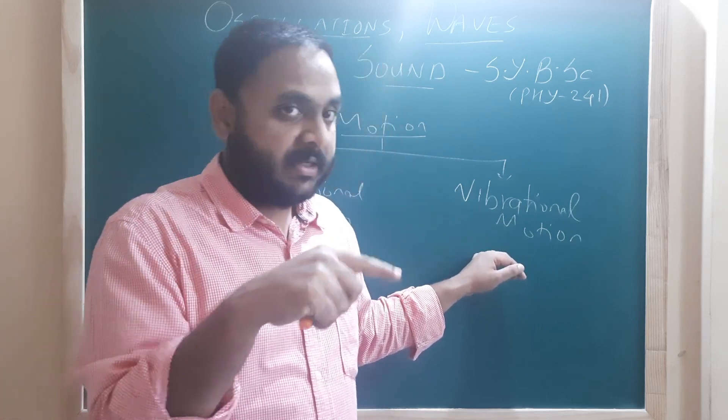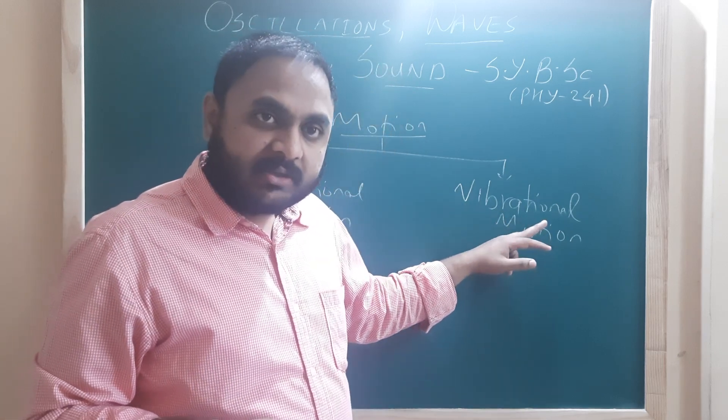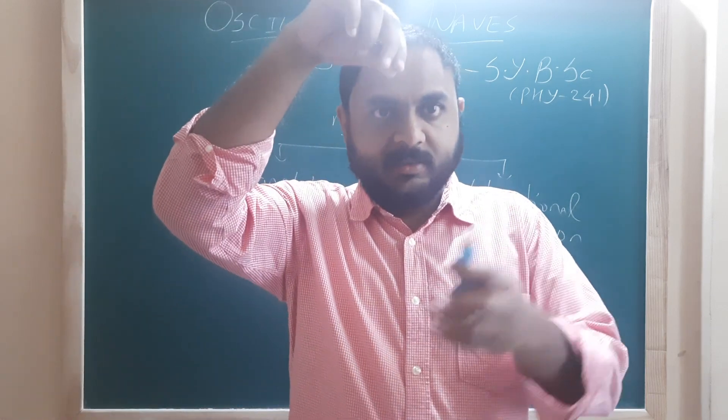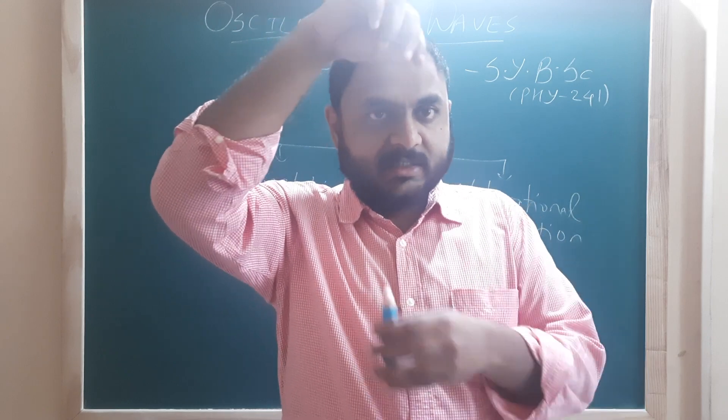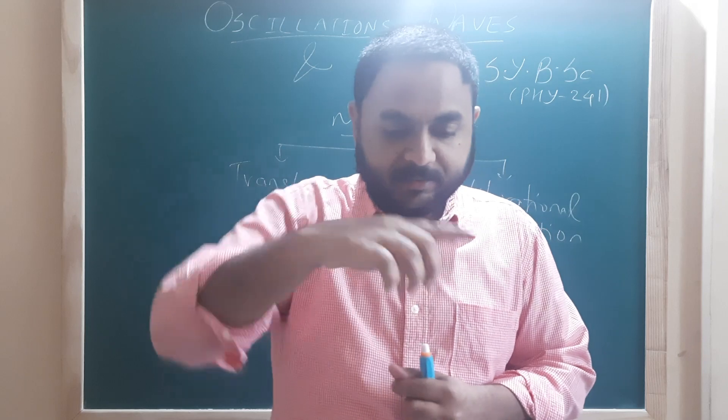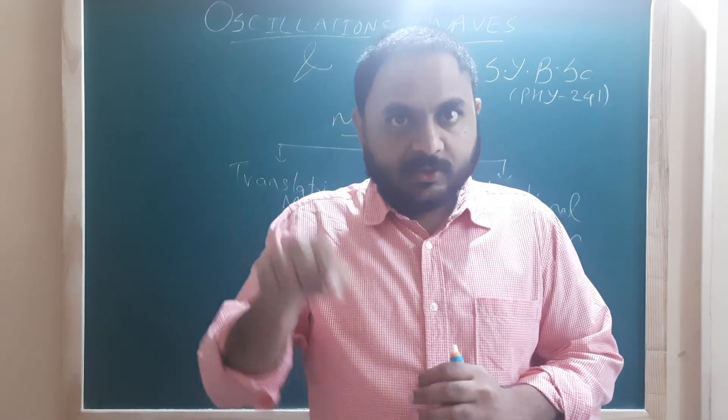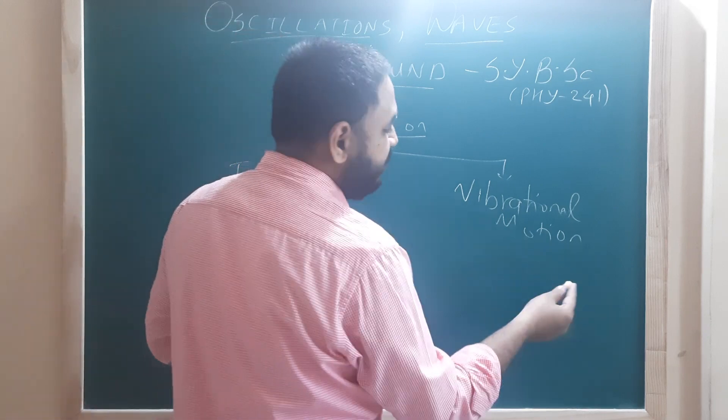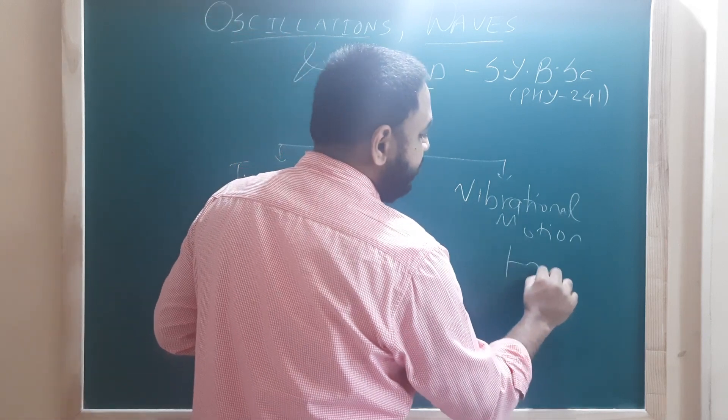What are the examples of these? The first example that all of us can think of is a simple pendulum, which we have seen right from our childhood. A simple pendulum executes oscillatory or vibrational motion across its position, back and forth. Another famous example is when you take a spring and attach a mass to it. When you pull it or push it, the mass will execute vibrational or oscillatory motion.